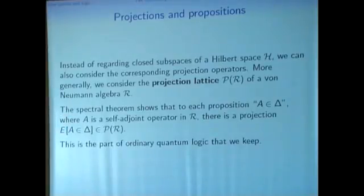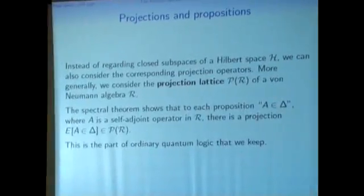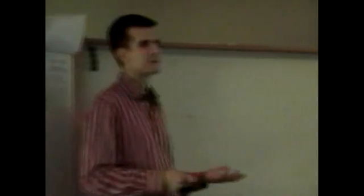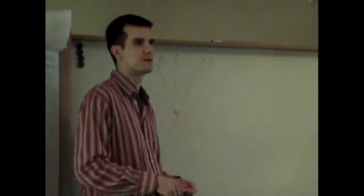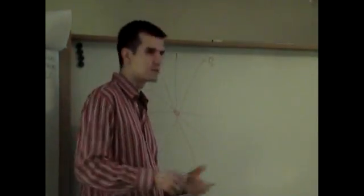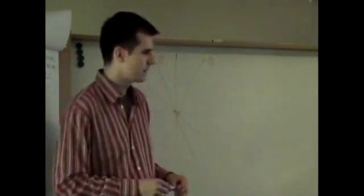This projection lies in the projection lattice of a von Neumann algebra. Is it possible to draw a simple projection lattice just to visualize it? Well, for two-dimensional Hilbert space, it's just all the lines through the origin. This is the picture. For three dimensions, simply take all the closed subspaces, and for finite dimensions, all the subspaces of the vector space. This is a visualization.